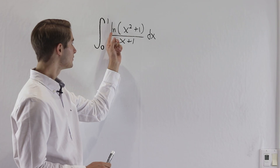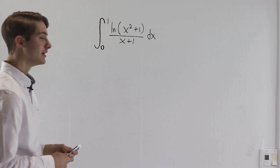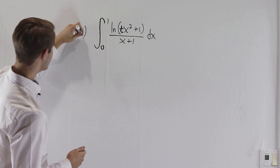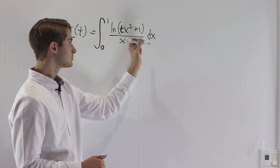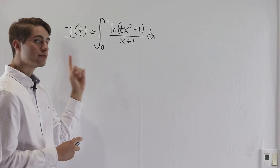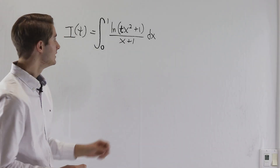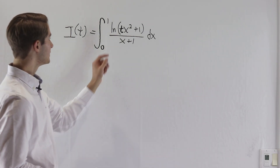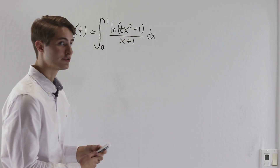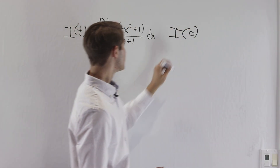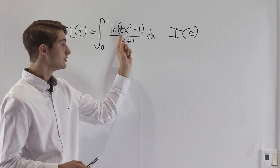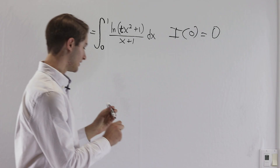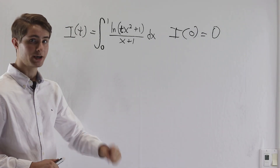To start off, I see this natural log of something plus 1 in the numerator. If I put a t here and let i of t equal this integral of natural log of t x squared plus 1, then differentiating the inside with respect to t makes the natural log go away and we get a rational expression. Also, because this t is multiplied by everything except the plus 1, if we plug in t equals 0, we get the natural log of 0 plus 1, which is just 0, across the whole integral. That will really help us when we finally solve this problem by integrating back to our original result.